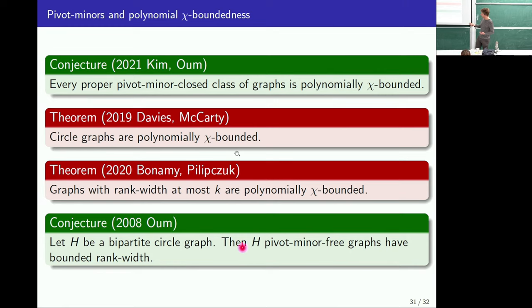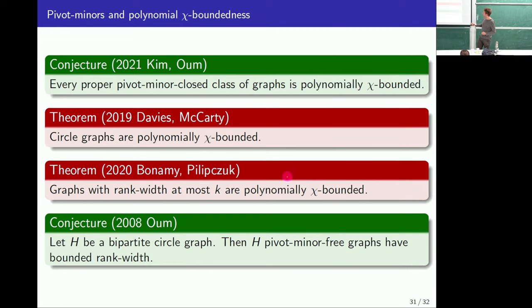One conjecture worth mentioning again is the conjectured grid theorem for pivot minors: if you forbid a bipartite circle graph as a pivot minor, then you have unbounded rank width. This would prove a case of the polynomial chi-bounded conjecture, because graphs of bounded rank width are polynomially chi-bounded. So this would give one nice case of the conjecture for when you're forbidding a bipartite circle graph.